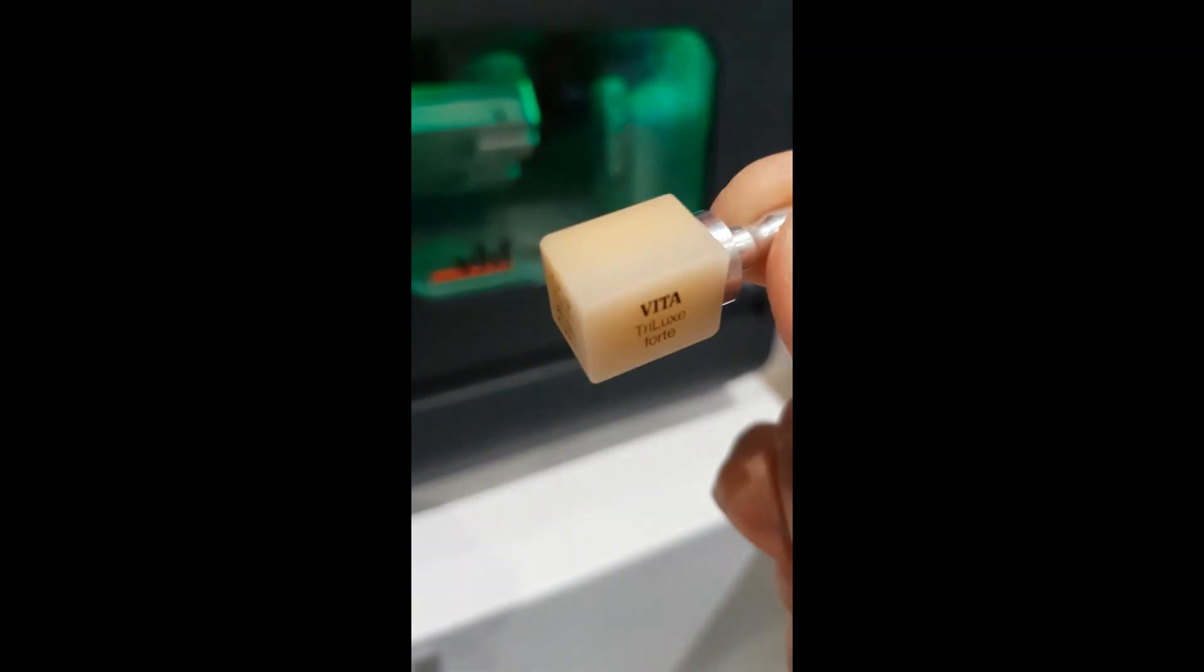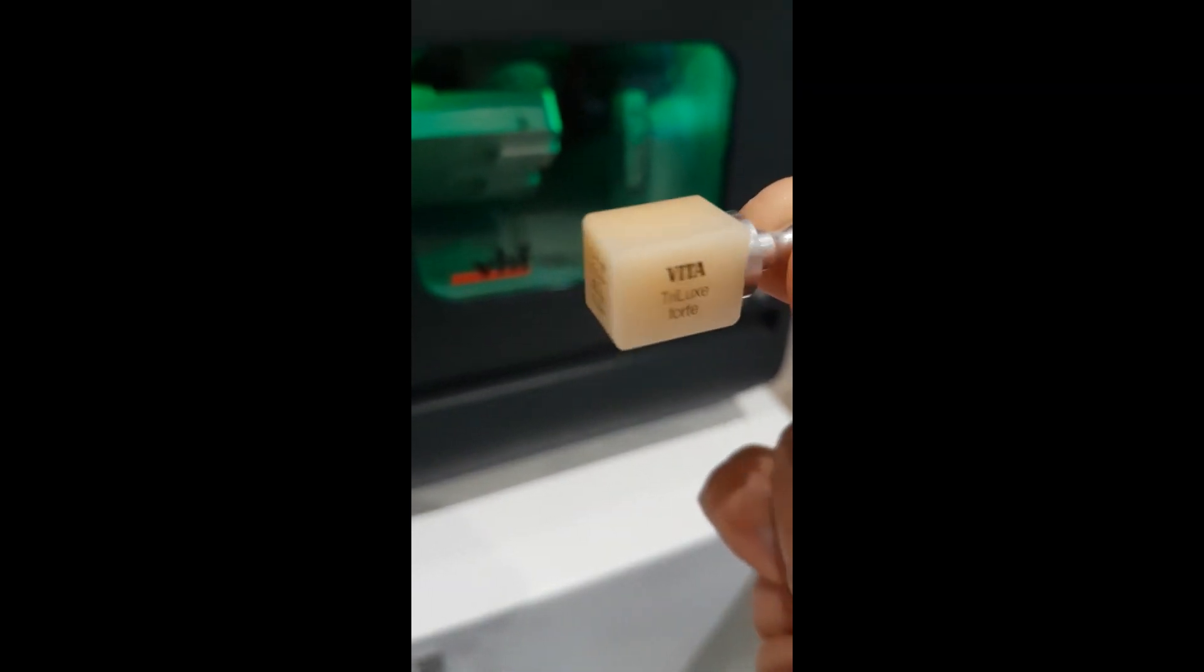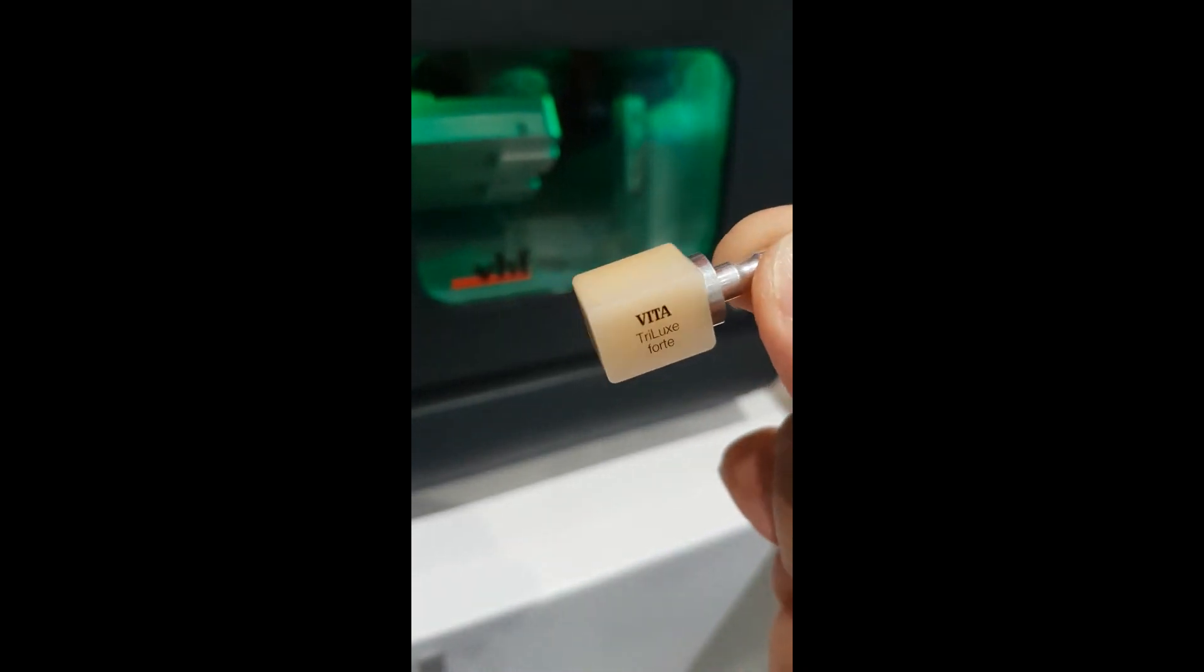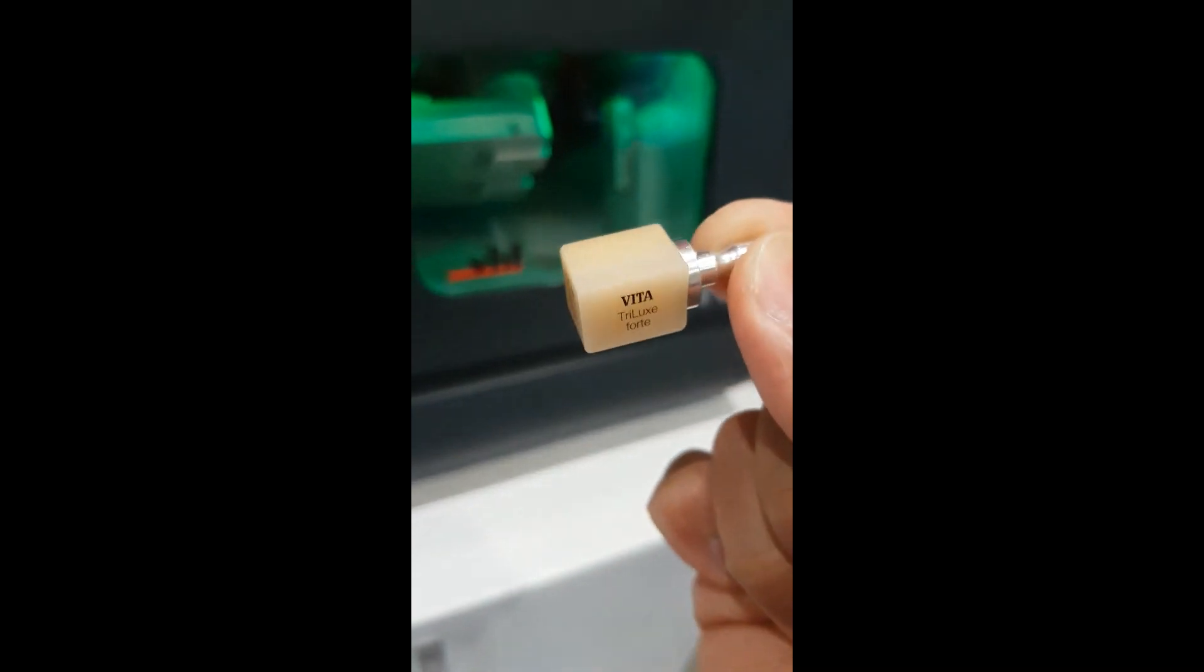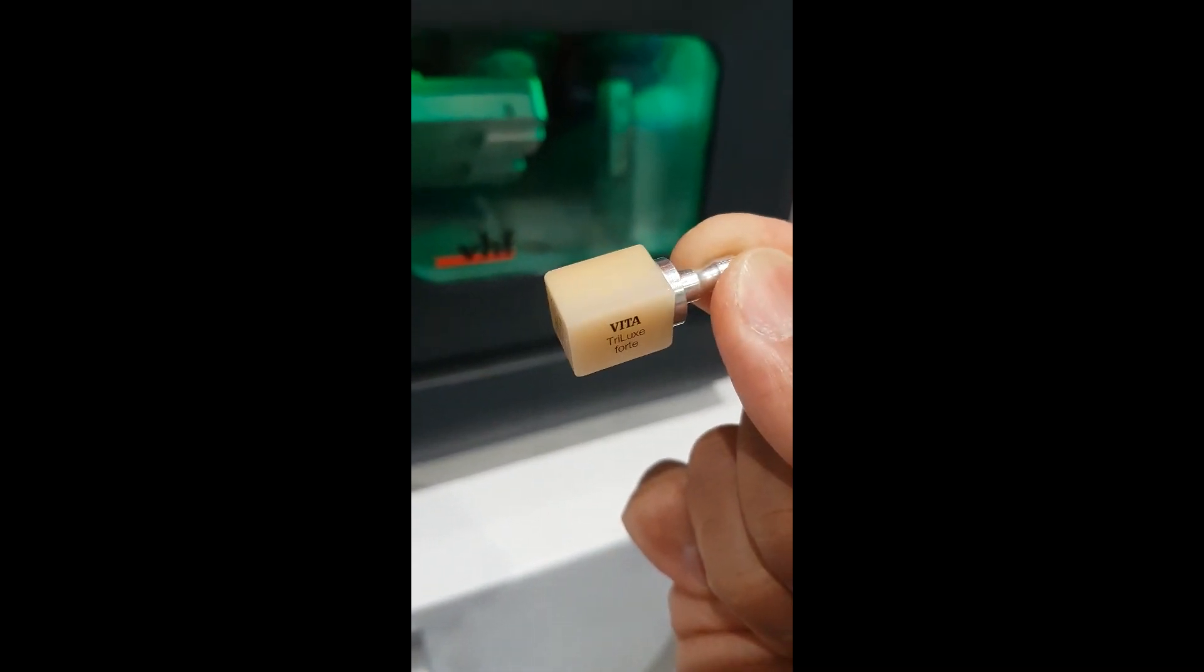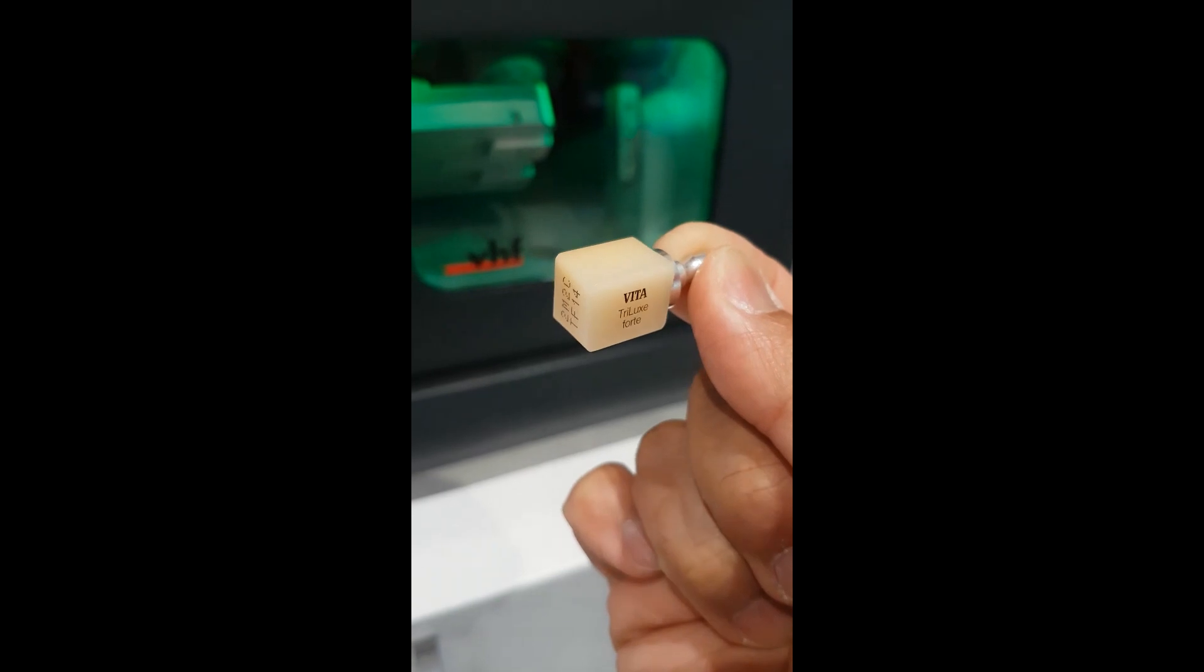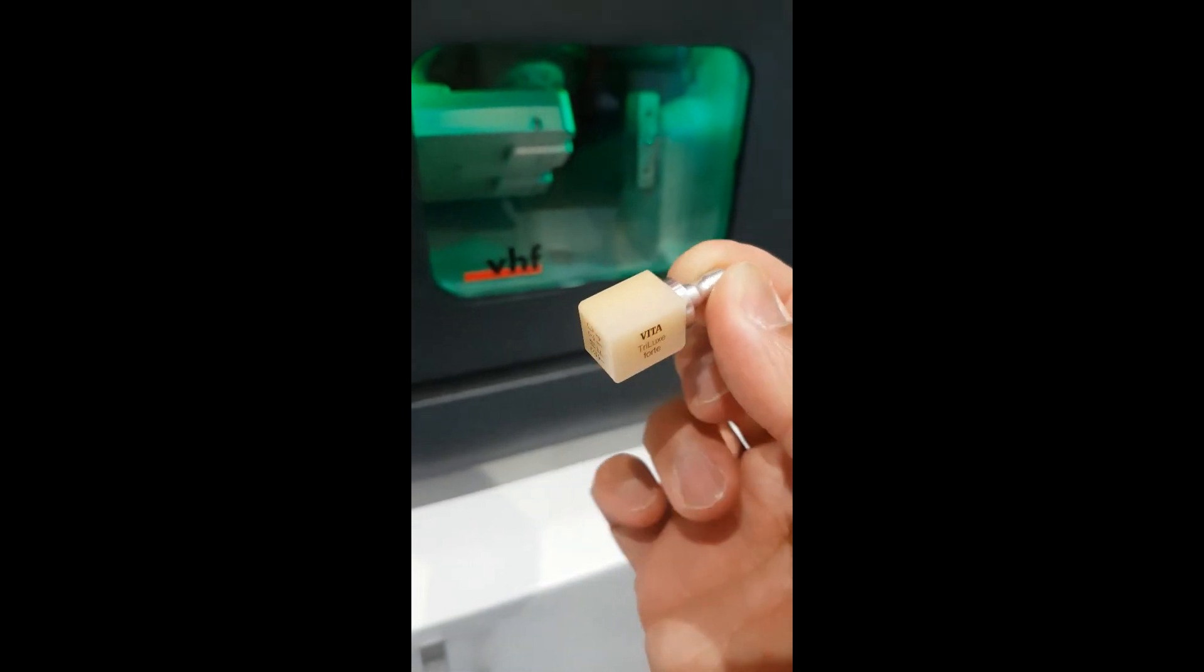Good afternoon everybody. This is a Vita Trilux Forte size 14mm block, and what we're going to do today is mill this into a crown for a lower left seven tooth—a full ceramic crown. I'm going to place it into our VHF milling machine.